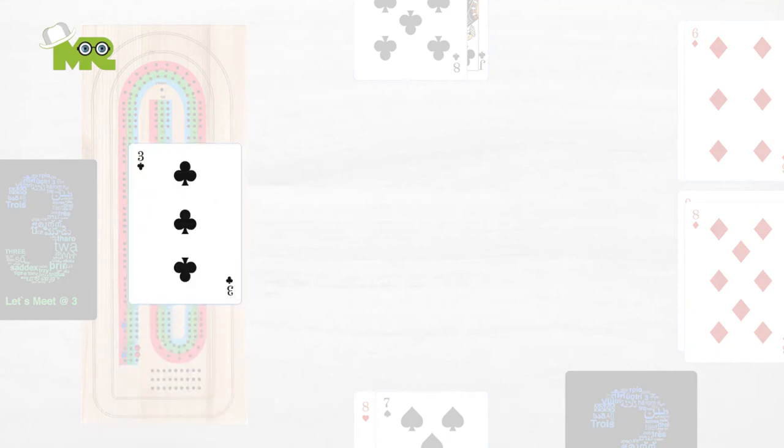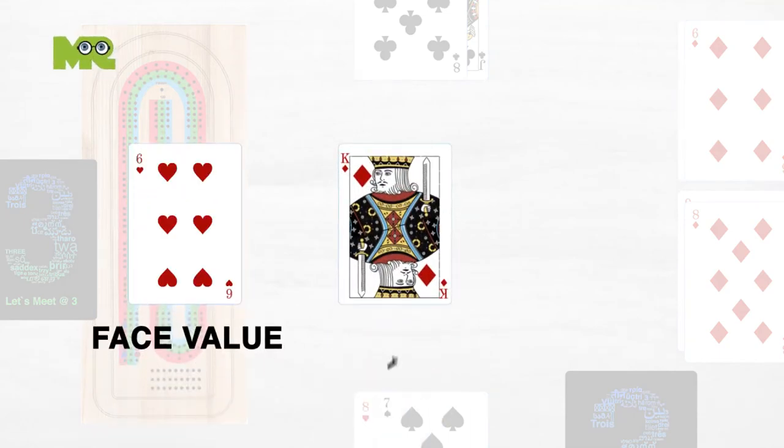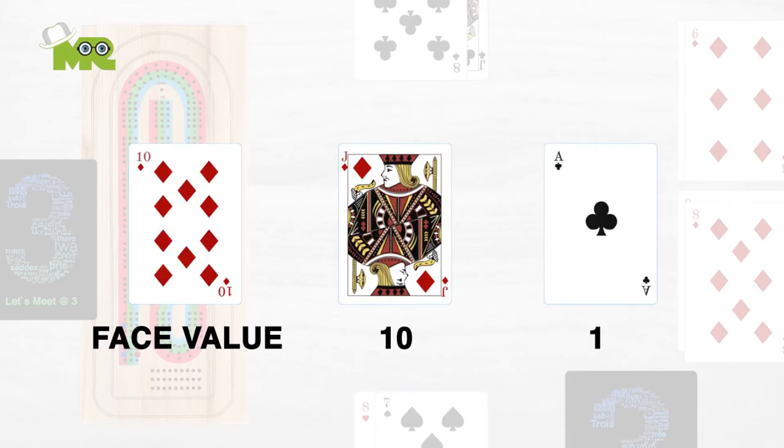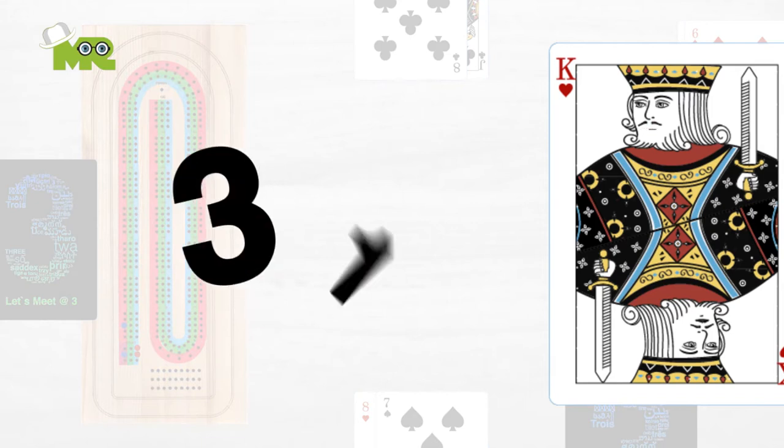Number cards are worth their face value and numeric value of kings, queens and jacks is 10, and the value of ace is 1. The running total should not exceed 31.